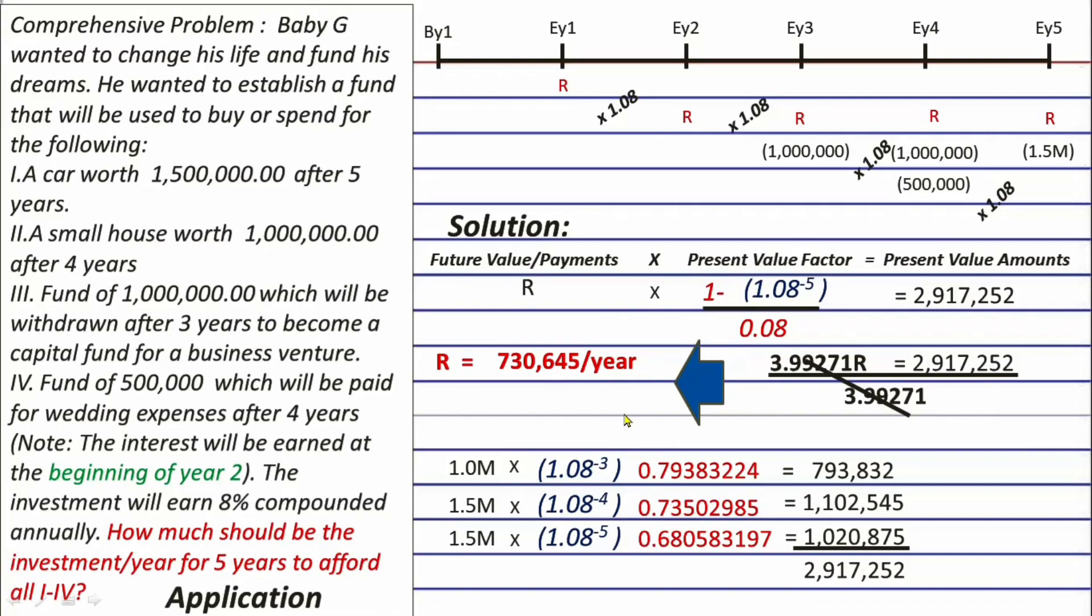First, let's prove that our solution works. Let's change this Rs here to 730,645. Now, let's complete the timeline and see if this here at the end of year 5 will really become 0 or become very close to 0, because if it is, then we are sure that we got the correct answer. So let's start!